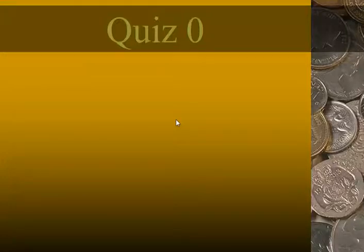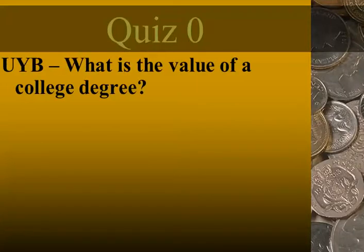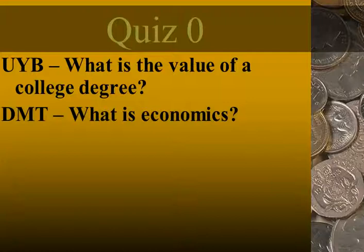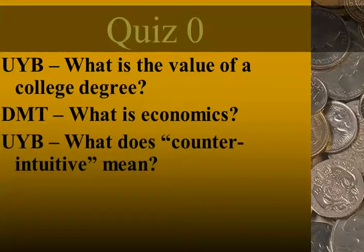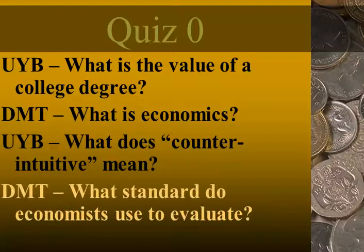If the silly boldface definition questions (SBD questions) don't really mean an explanation, and the basic outline (BO) questions were already taken care of quickly in another video, then what about the harder ones — the three-point questions that are going to be on every quiz? Here are some examples from the beginning of chapter one: a 'use your brain' (UIB) question like 'what is the value of a college degree,' a 'don't miss this' (DMT) question like 'what is economics,' another UIB question 'what does counterintuitive mean,' and a DMT question 'what standard do economists use to evaluate.'